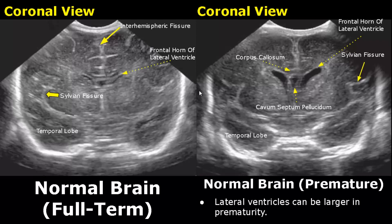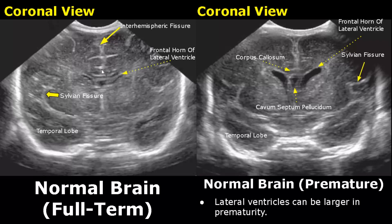Most of the views taken are coronal as it provides the most detail about the brain. On the left side is the normal brain of a full-term infant in coronal view. This hyperechoic line in the middle is the inter-hemispheric fissure. These small hypoechoic structures are the frontal horns of lateral ventricles, and between these horns is the cavum septum pellucidum.